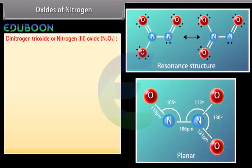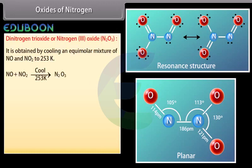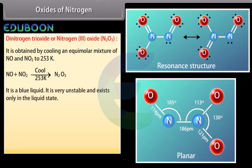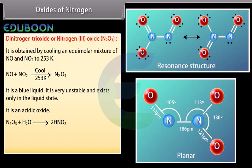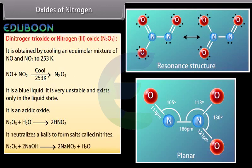Dinitrogen trioxide (N2O3, nitrogen(III) oxide) is obtained by cooling an equimolar mixture of NO and NO2 to 253 K. It is a blue liquid that is very unstable and exists only in the liquid state. It is an acidic oxide and neutralizes alkalis to form salts called nitrites.